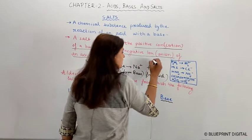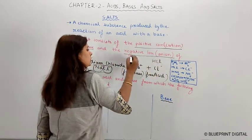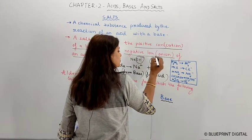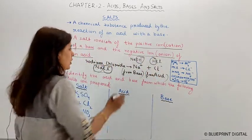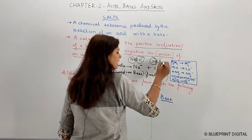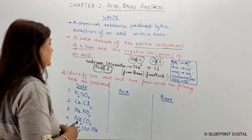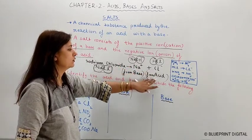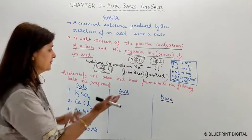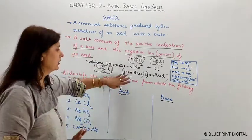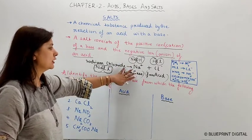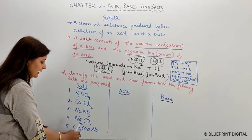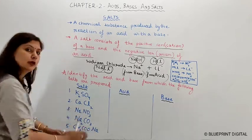For example, sodium chloride: sodium is the positive ion and chloride is the negative ion. The sodium comes from the base NaOH, and the chloride ion comes from the acid hydrochloric acid (HCl). The OH from the base and the H from the acid combine to form water. So the cation (positive ion) comes from the base and the anion (negative ion) comes from the acid.